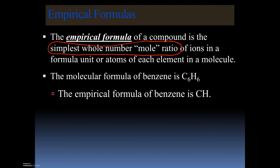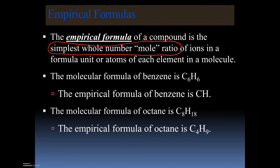We have a compound called benzene, which has a molecular formula of C6H6. Benzene can be reduced to an empirical formula of CH. The molecular formula is the actual formula for that compound, but the empirical formula is the simplified version — the simplest whole number mole ratio. Another example would be octane, C8H18, which can be reduced to C4H9.